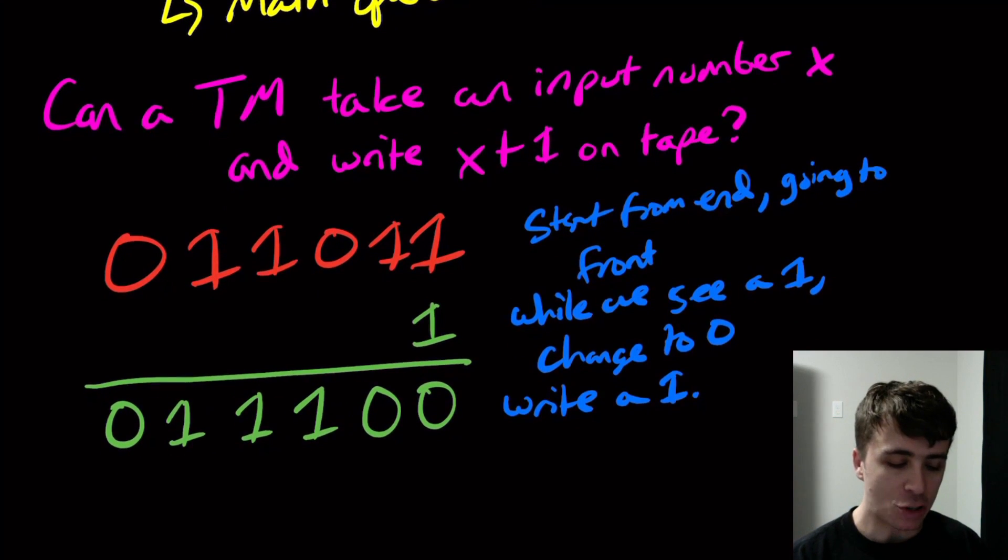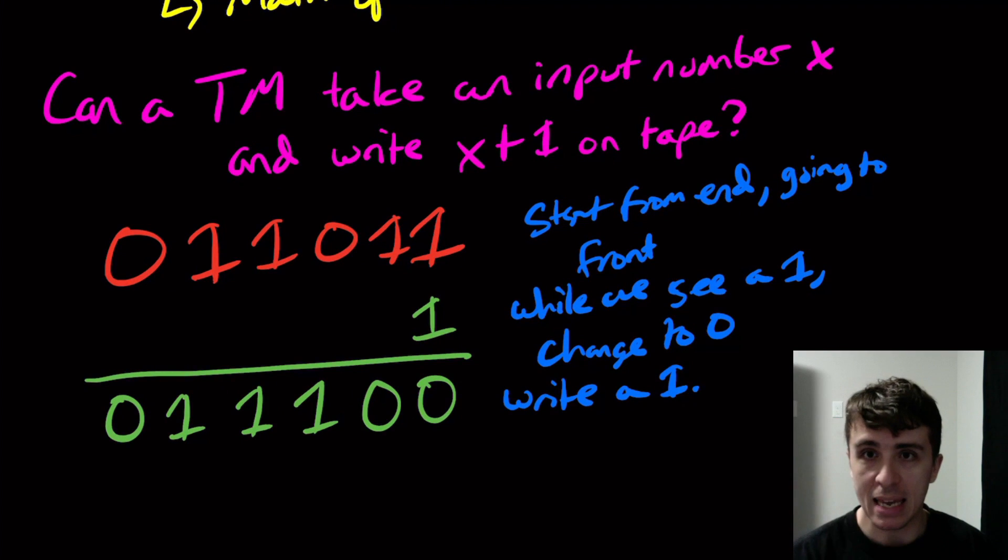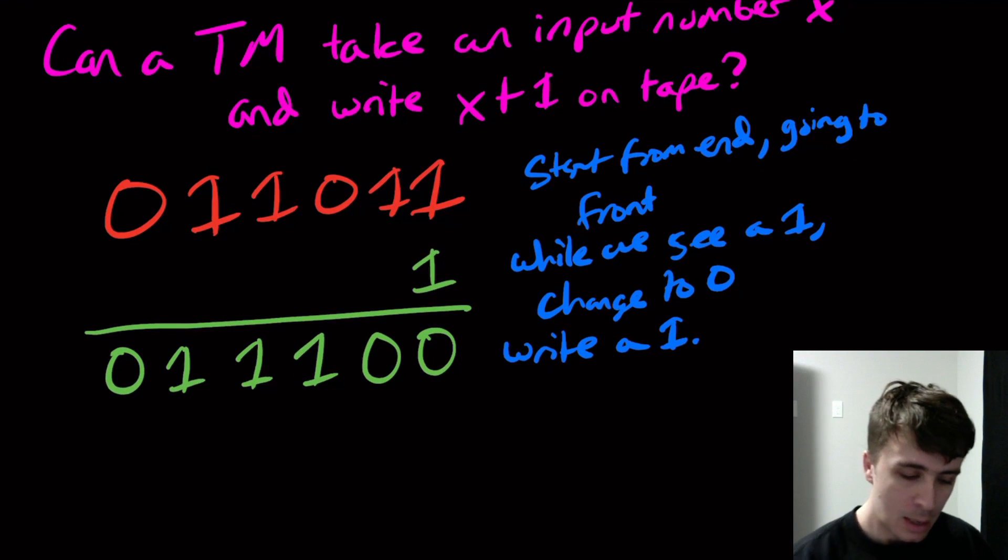So we can actually have a Turing machine take an input number and increment it, add 1 to it. So we can handle all of the program counter stuff in the usual way when it's moving one instruction at a time.